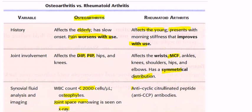Remember: osteoarthritis presents with Heberden and Bouchard nodes in an elderly patient. Rheumatoid arthritis presents in a young patient with symmetrical distribution, ulnar deviation, and swan neck appearance.